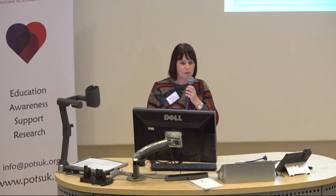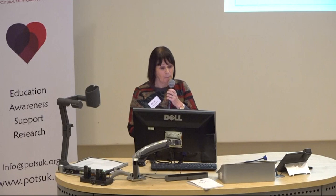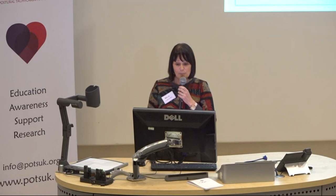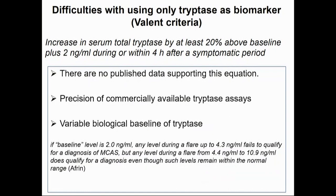Can we say that commercially available tryptase assays are precise enough to allow this when the levels may be very low to start off with? This is a quote from Laurence Afrin: if you've got a baseline of two and during a flare it goes up to 4.3 or less, then it fails to qualify for a diagnosis of MCAS. But if it goes between 4.4 to 10.9, then it does qualify, even though that is within the normal range. So you can see that really doesn't hold water.